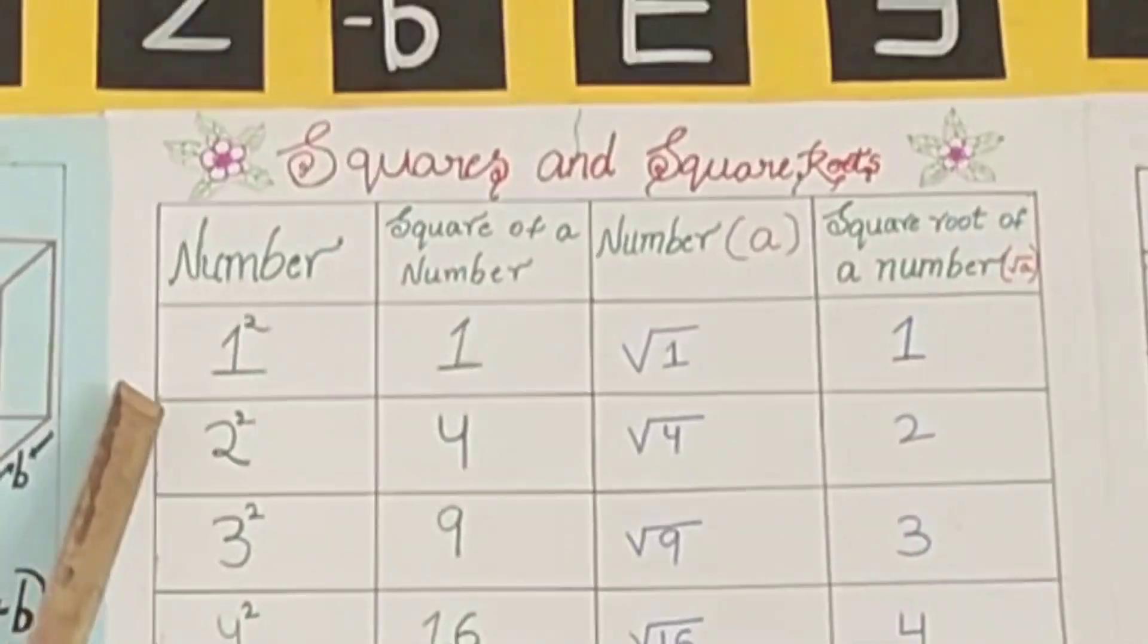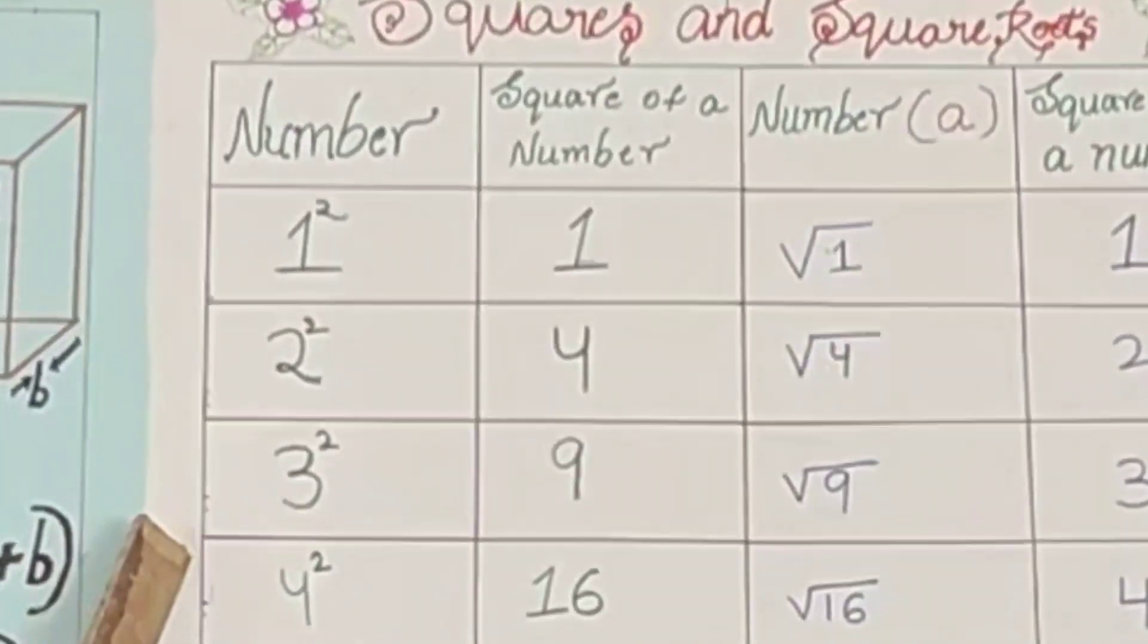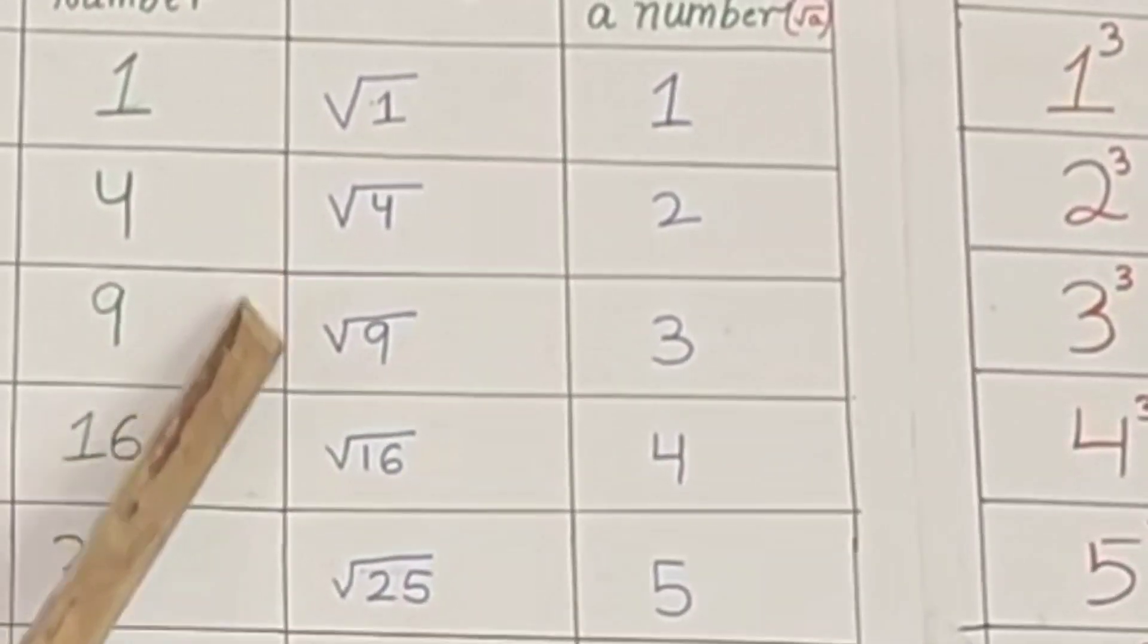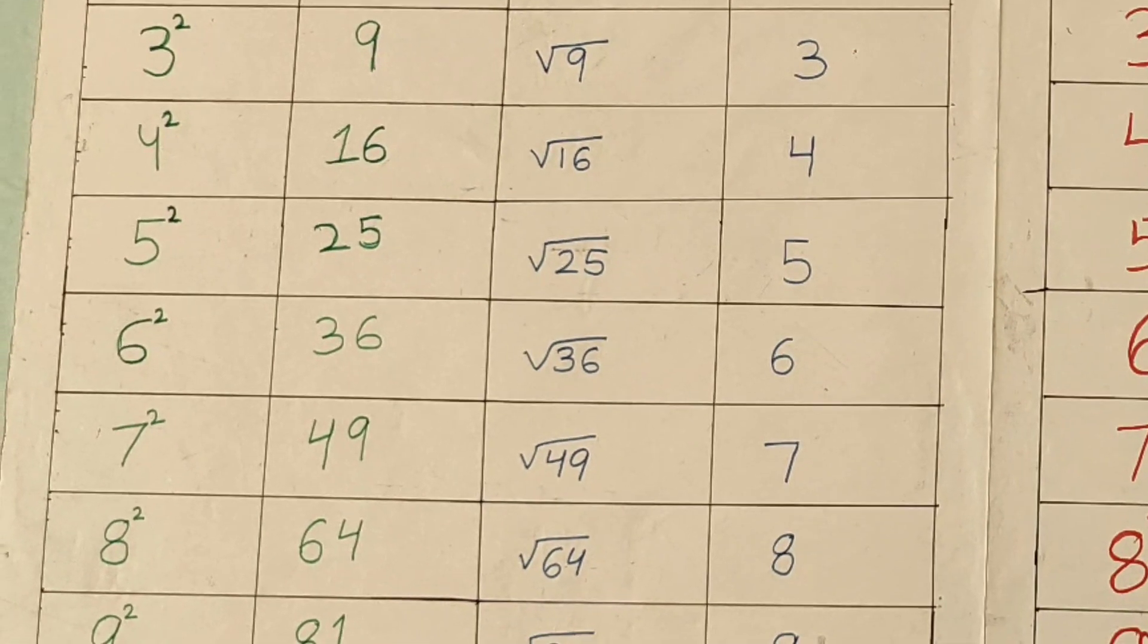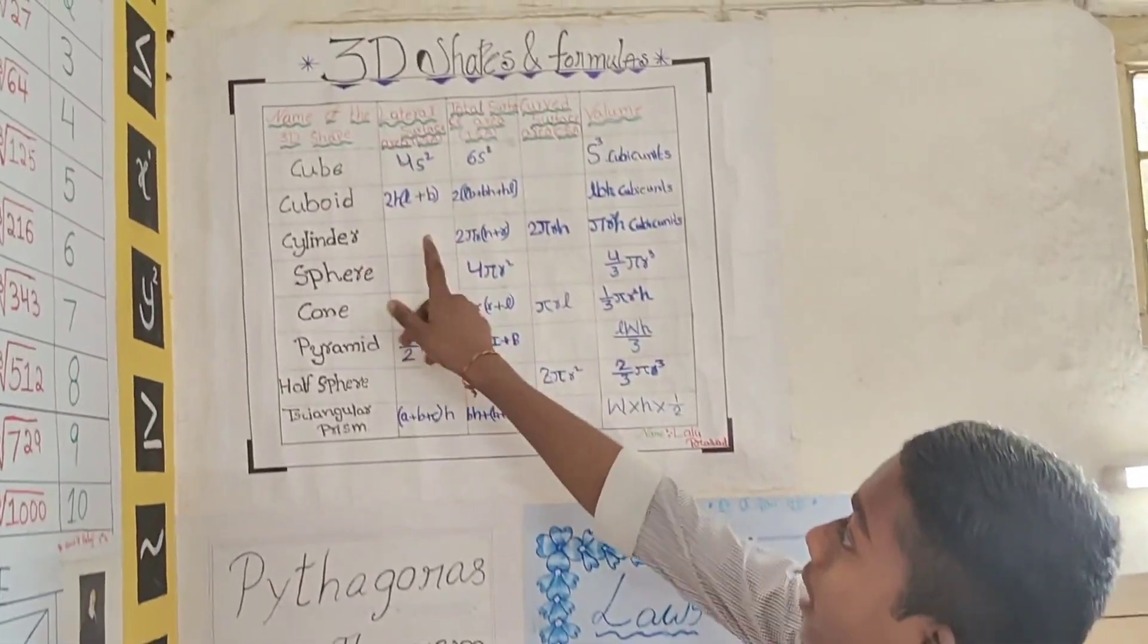Square and square roots. Number, square of a number: 1 square is 1, 2 square is 4, 3 square is 9. Root 1 is 1, root 4 is 2, root 9 is 3, root 64 is 8, root 81 is 9, root 100 is 10.